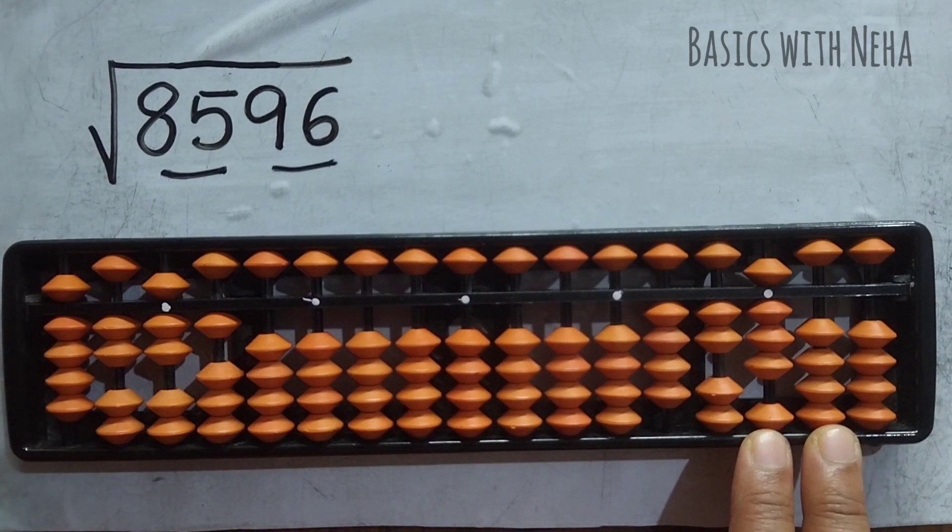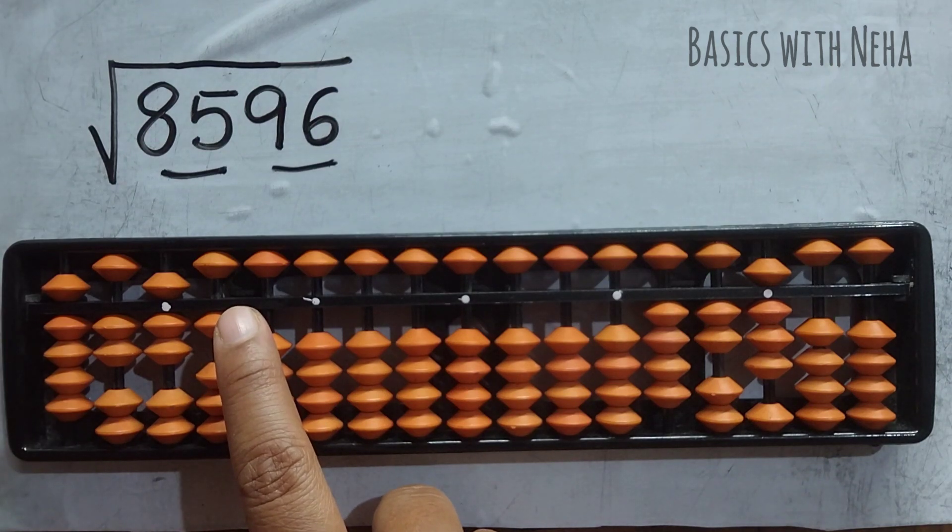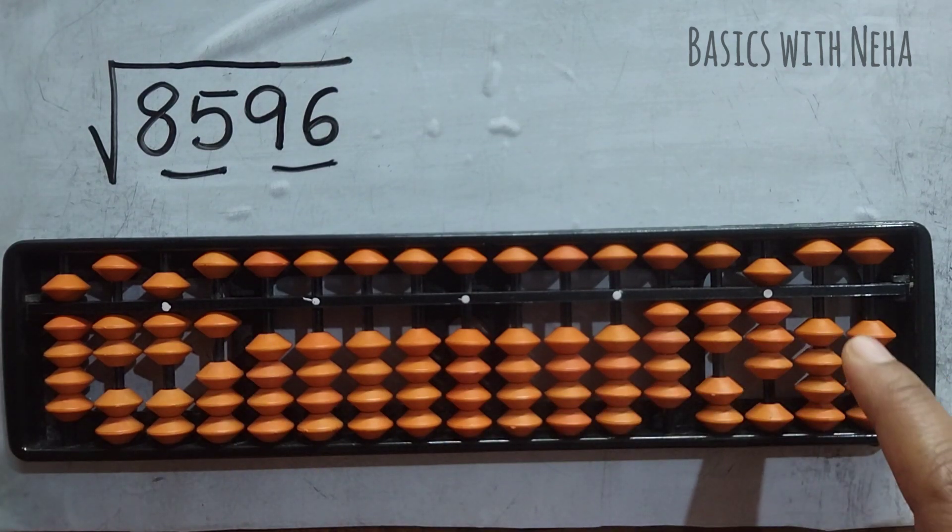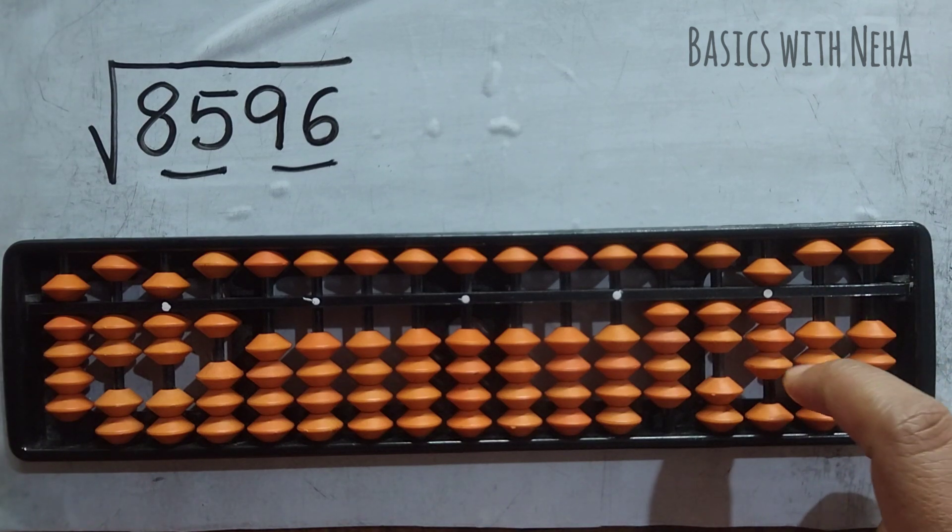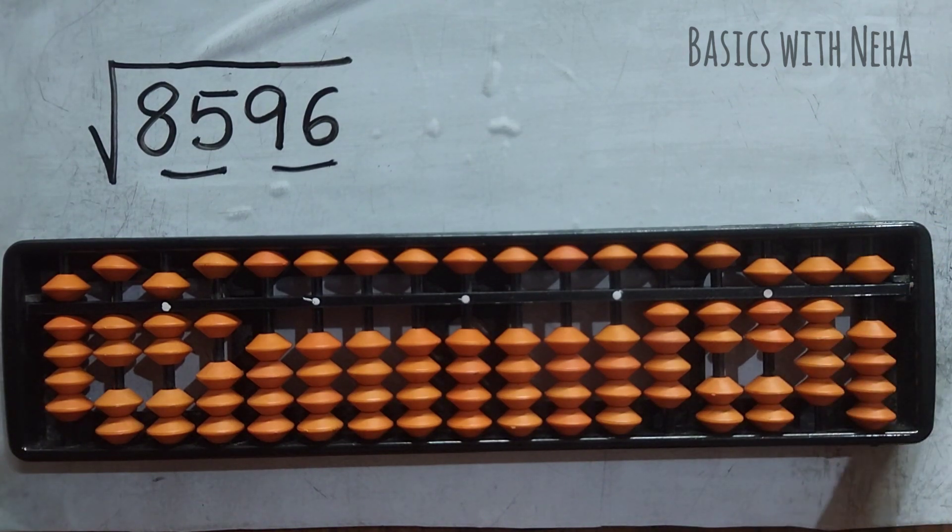Now these two rods. 1 squared is 1. Half is 0.5. So it will be here, 0.5. Then it will continue.